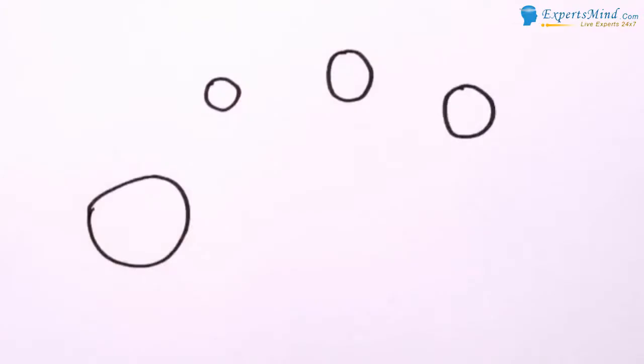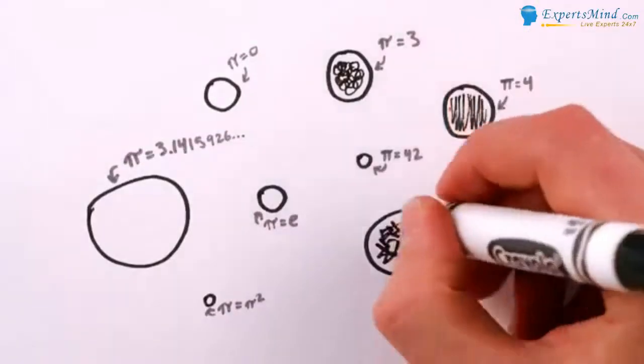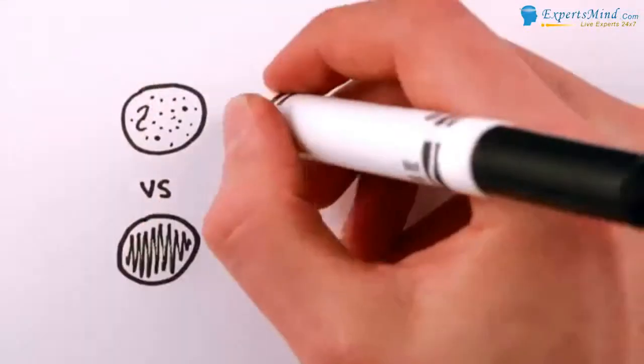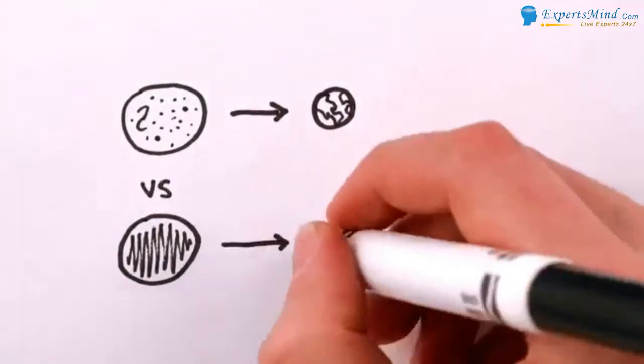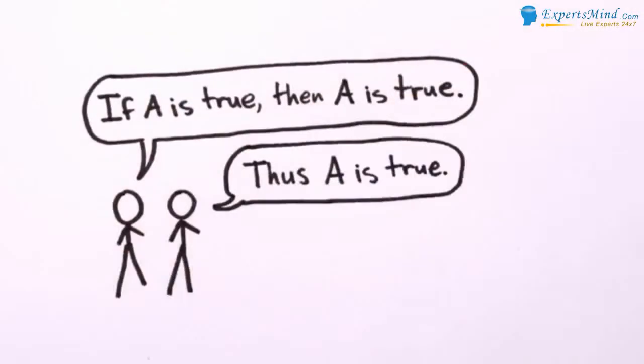As the argument goes, if each of these separate mutually unseeable bubbles in the universe had slightly different laws of physics, then by definition we could only exist in one that had the right physical laws to allow us to exist. Like we have to live in a universe where the earth could form, because if the earth couldn't form, then we couldn't be here. If you're not convinced by this logic, don't worry too much, there's not yet any experimental evidence for this kind of multiverse.